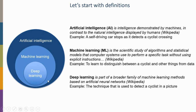Machine learning is a scientific study of algorithms and statistical models that computer systems use to perform a specific task without using explicit instructions. For example, I can teach a machine to detect a cyclist without telling it to look for two small wheels — I only give it data, and the algorithm learns itself how to distinguish a cyclist from other things like rain. It's a purely data-driven approach.